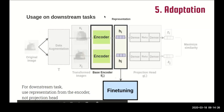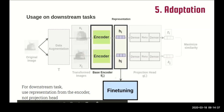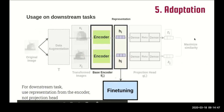Once training is done, we simply throw away the projection head and use the base encoder for any downstream tasks, such as fine-tuning for classification or object detection. One important thing to note is that for downstream tasks, we use the embedding vector from the base encoder, not from the projection head. We will see why in the following section.